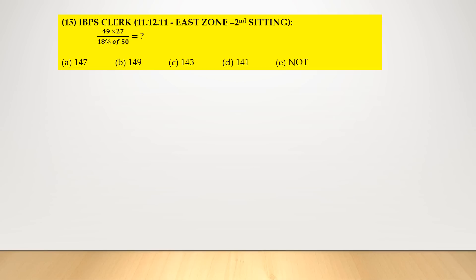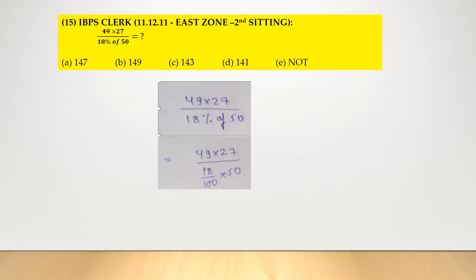Question: 49 × 27 divided by 18% of 50. 18% of 50 can be written as 18/100 × 50 = 9. So 49 × 27 divided by 9 equals 49 × 3 = 147. Option number A.